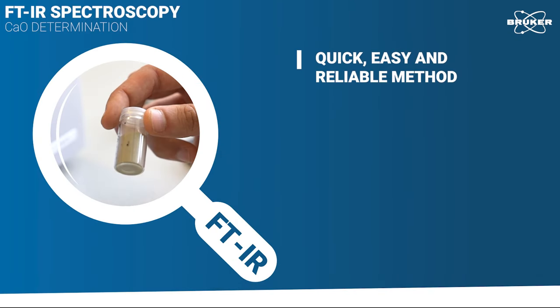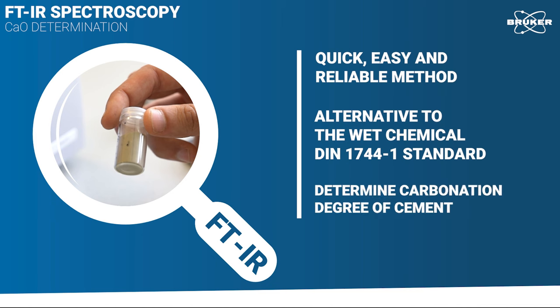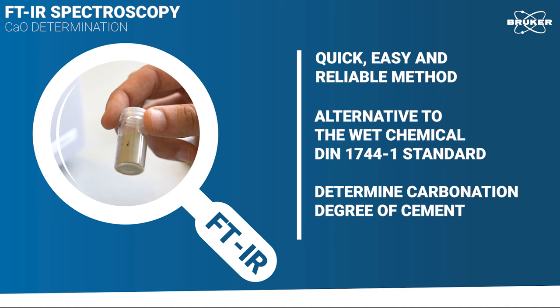FTIR is a quick and easy way to determine the amount of free calcium oxide in Portland cement and a great alternative to wet chemical methods like the DIN EN1744-1 standard. But that's not all, as infrared spectroscopy is able to determine the carbonation degree of cement and even test sulfate content.